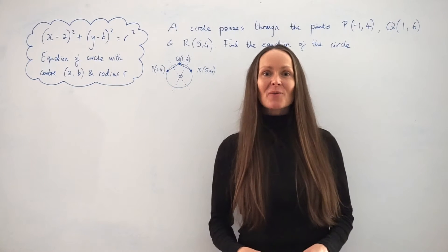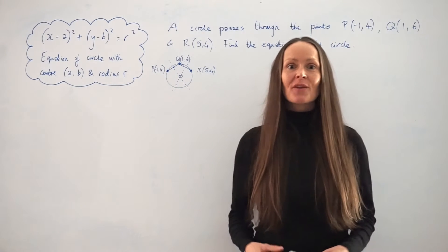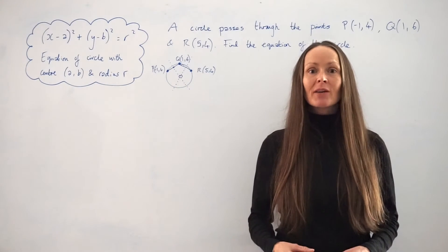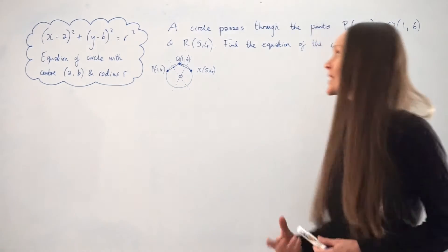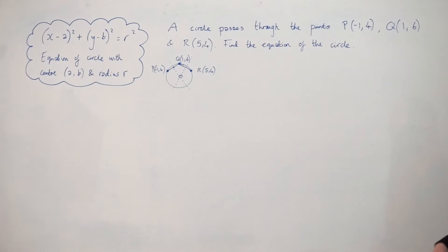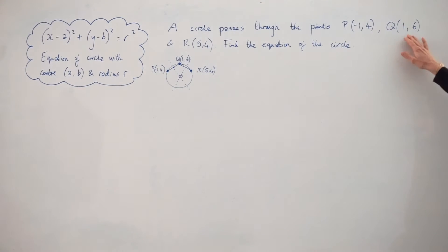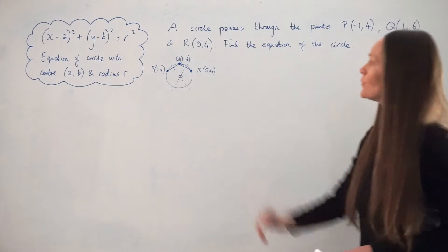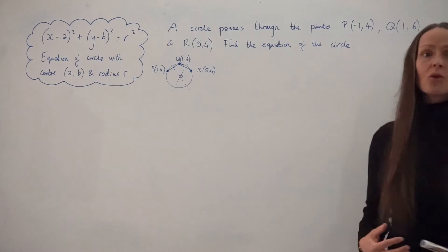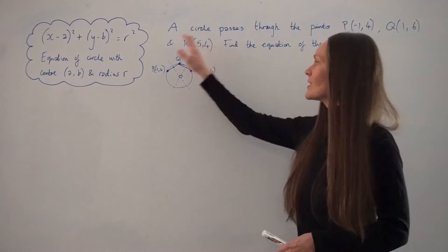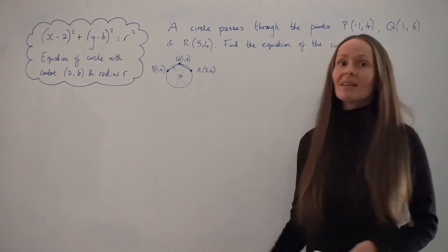In this lesson I'm going to show you how to find the equation of a circle when you're given three points that lie on the circumference. In our example, a circle passes through the points P at (-1, 4), Q at (1, 6) and R at (5, 4). Find the equation of the circle. It's helpful if you can draw a rough sketch to visualise better what's happening in the question.